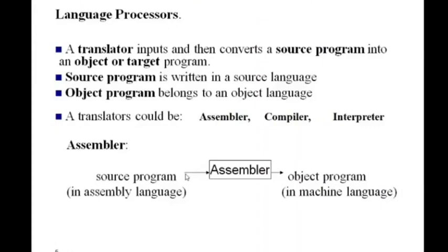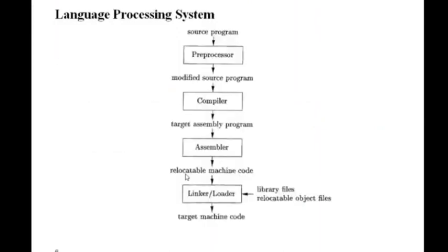The first translator we have used is the assembler, which takes an assembly program and converts it to an object program. When doing this conversion process, you need the cousins of compilers — the cousins of these translators are the preprocessor, assembler, linker, and loader. Let me tell you the use of each one.